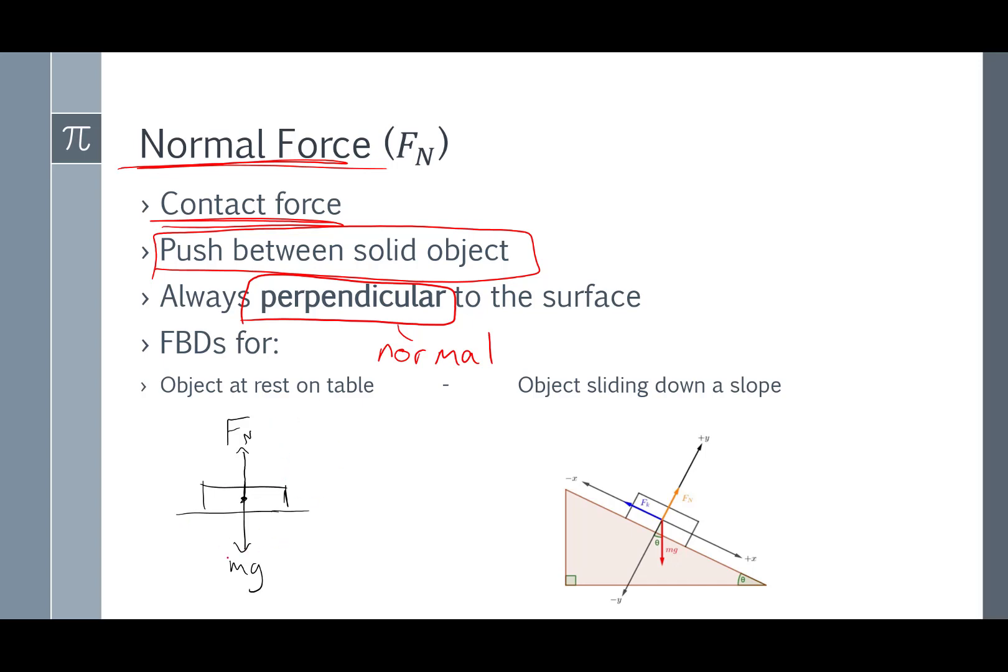Here are free body diagrams for an object at rest on a table. Gravity pulls the object down, but the table pushes up with an equal force, and that's why the object doesn't move. We already talked about the object sliding down the ramp. Gravity pulls down, friction tries to slow down the object, the normal force pushes up perpendicular to the surface. Notice it's always perpendicular. It's not straight up, it's at an angle perpendicular to this surface right here.